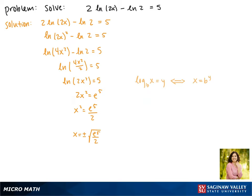Now let's check to see if x equals the square root of e to the fifth over 2 is extraneous. Plugging it in gives us 2 times the natural log of 2 times the square root of e to the fifth over 2, minus the natural log of 2 equals 5. Since what's inside our natural log gives us a positive number, this is a real solution.